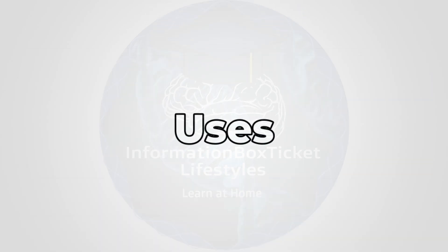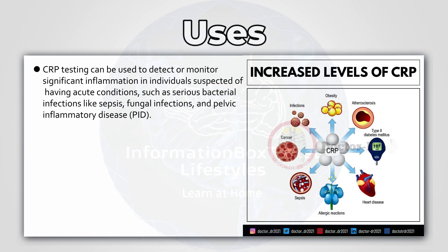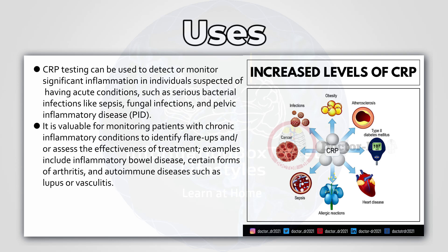Uses of C-Reactive Protein Test. C-Reactive Protein testing can be used to detect or monitor significant inflammation in individuals suspected of having acute conditions, such as serious bacterial infections like sepsis, fungal infections, and pelvic inflammatory disease. It is also valuable for monitoring patients with chronic inflammatory conditions to identify flare-ups and assess the effectiveness of treatment, including inflammatory bowel disease, certain forms of arthritis, and autoimmune diseases such as lupus or vasculitis.